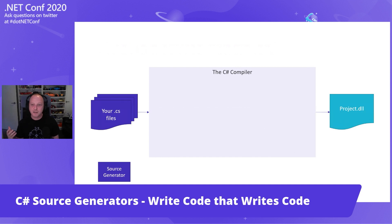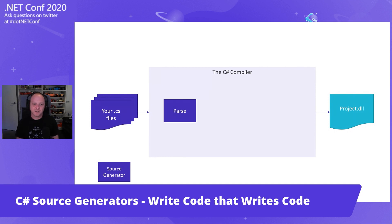This is the highest-level view of the C# compiler. When you compile your code, you have your C# files on the left-hand side, they get sent into the compiler, and we get a DLL at the other end. But what really happens inside the compiler? There are a few different phases. The first one is the parse phase, which takes your C# code and turns it into an object model called a syntax tree — in the C# compiler's case, it's called the concrete syntax tree.